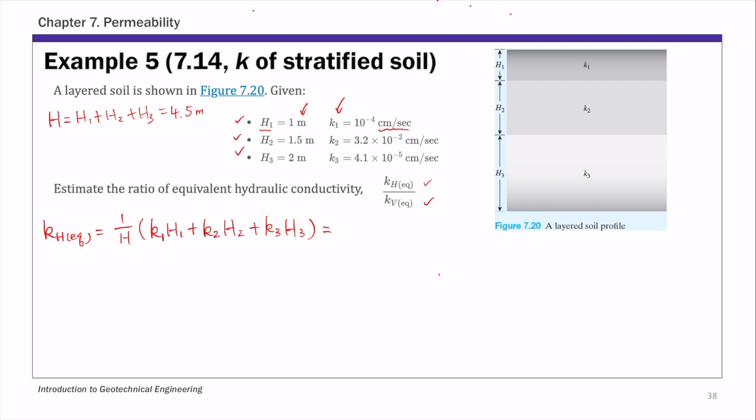If you substitute all these numbers, this equivalent horizontal hydraulic conductivity is 1.707 times 10 to negative 4 centimeter per second.